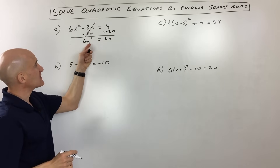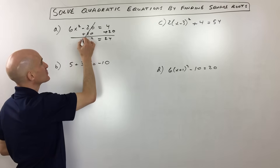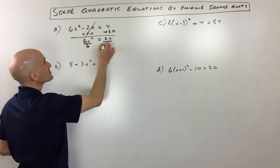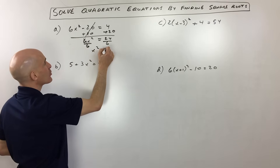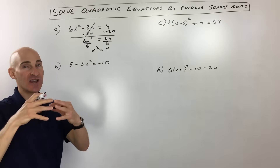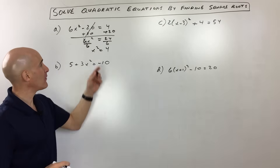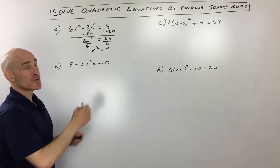Now, same thing — we're multiplying by 6, so we want to do the opposite of multiplying by 6. We want to divide both sides by 6. So we're narrowing down, getting closer to isolating x by itself. And now we've got x squared equals 4.